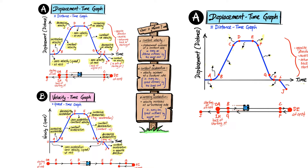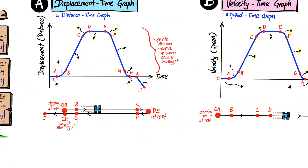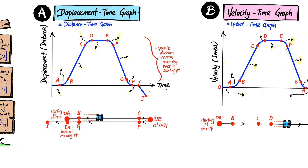In this video we're going to practice describing the motion of the car using a displacement-time graph and a velocity-time graph. You can see that the shape of both graphs are the same, but because one is a displacement-time and the other is a velocity-time graph, the motion described is actually very different even though they look the same. Let's start with the displacement-time graph.